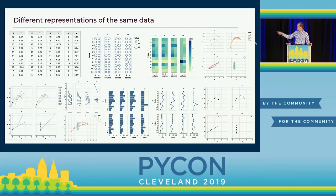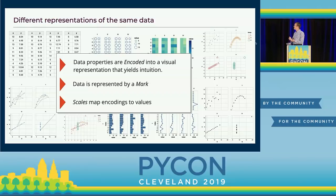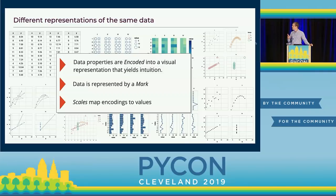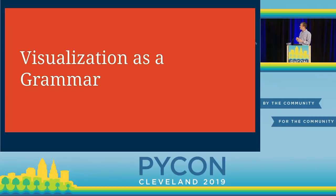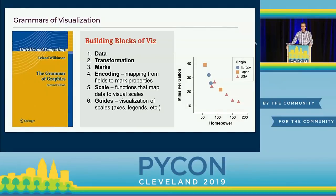As a quick summary: what I've been describing is something where data properties are encoded in visual representations. We have the data represented by some mark — that might be a line, a point, a bar, a patch on a heat map — and we have scales that map these encodings onto the underlying values. The scales might be numbers on the x-axis, labels in the legend, or a color bar. This suggests we can start talking about visualization in terms of grammar. A famous book that addresses this is Wilkinson's The Grammar of Graphics.